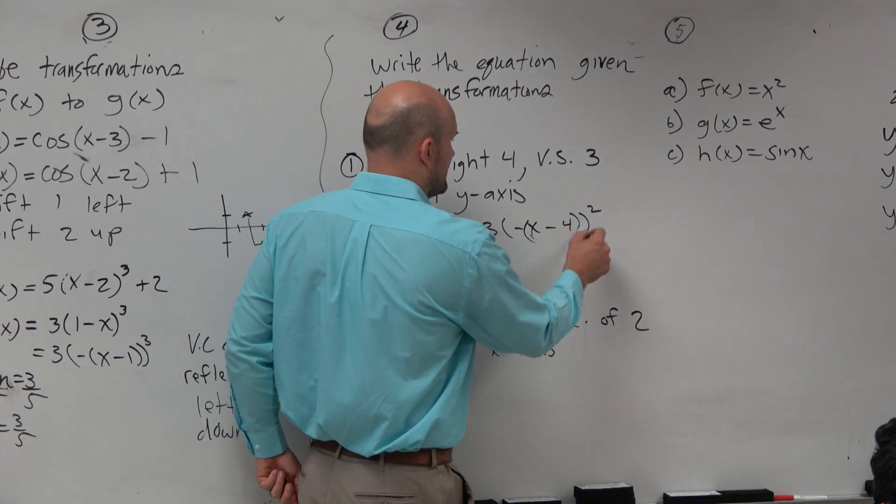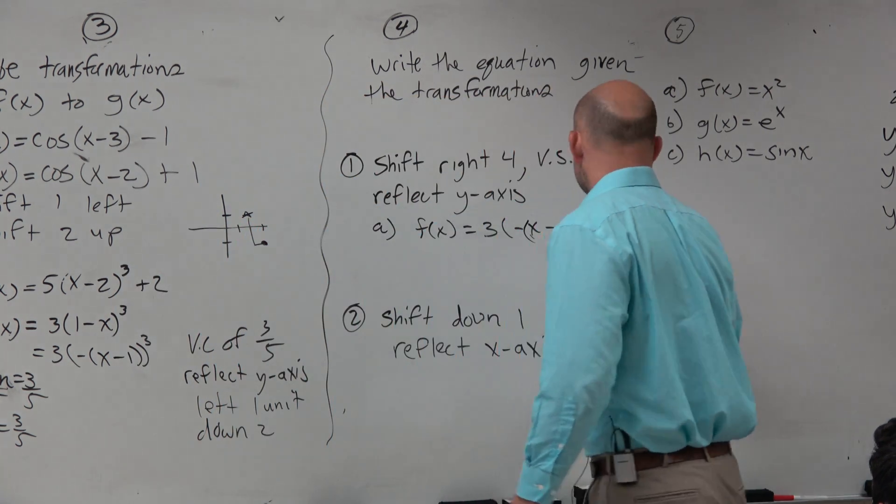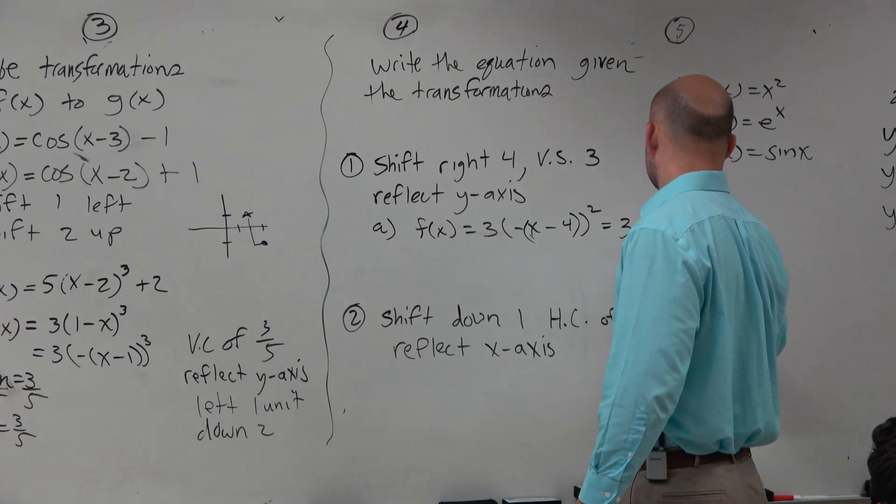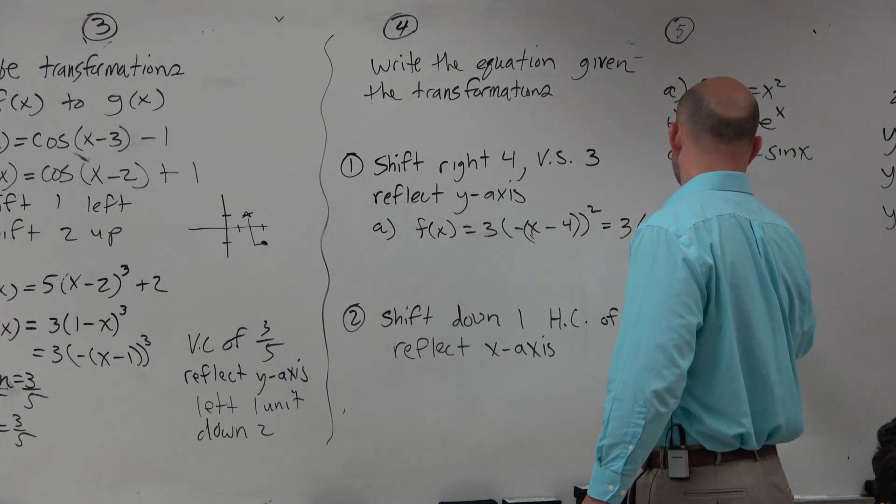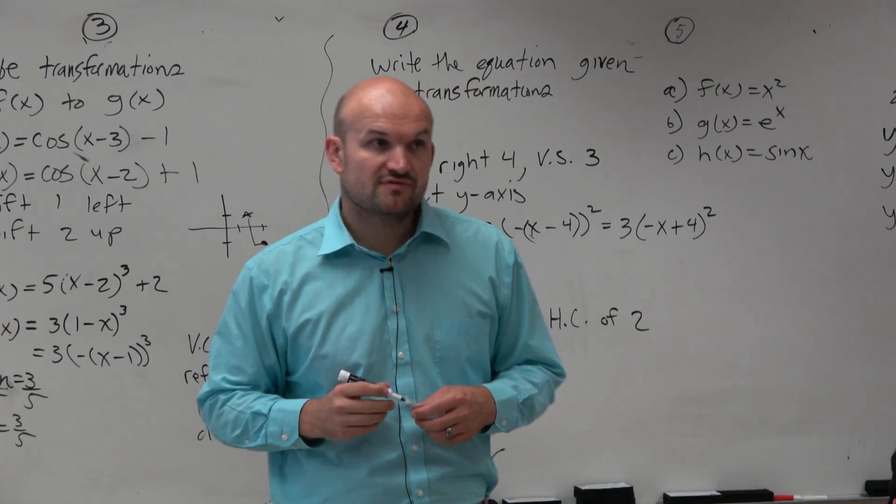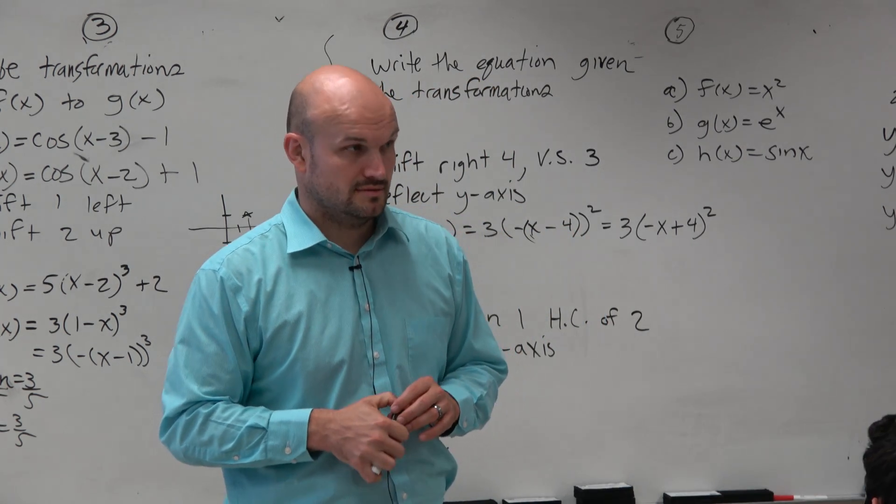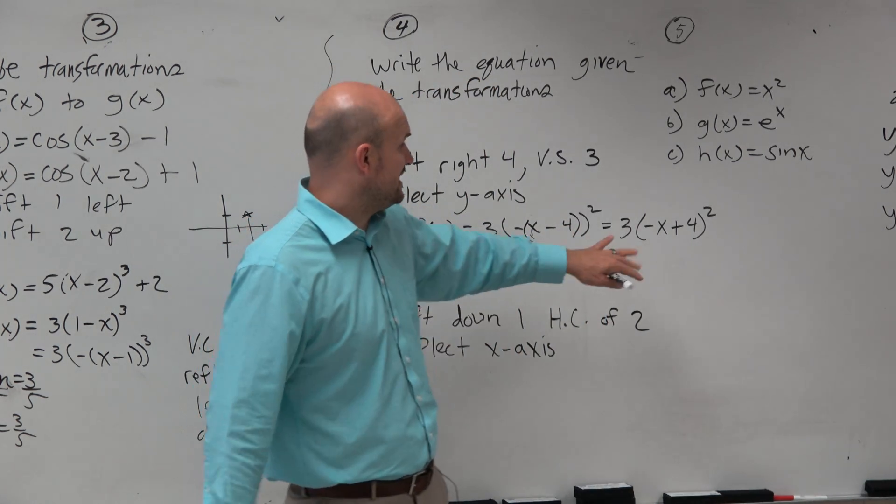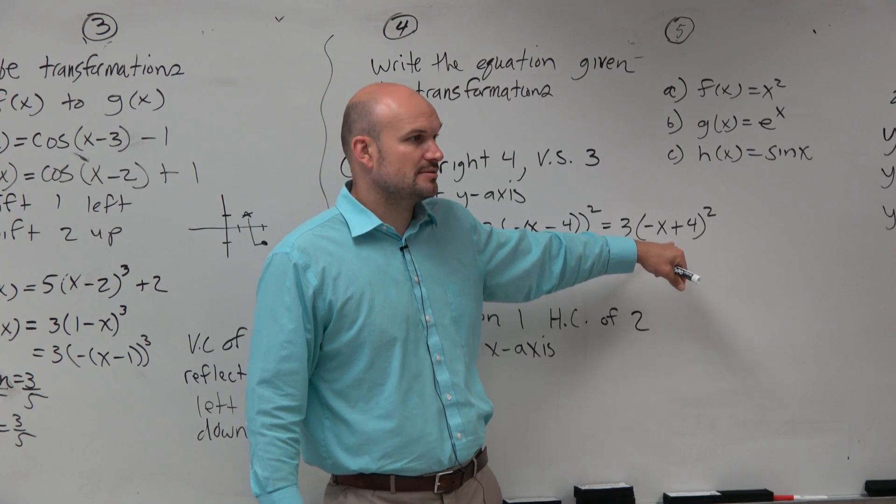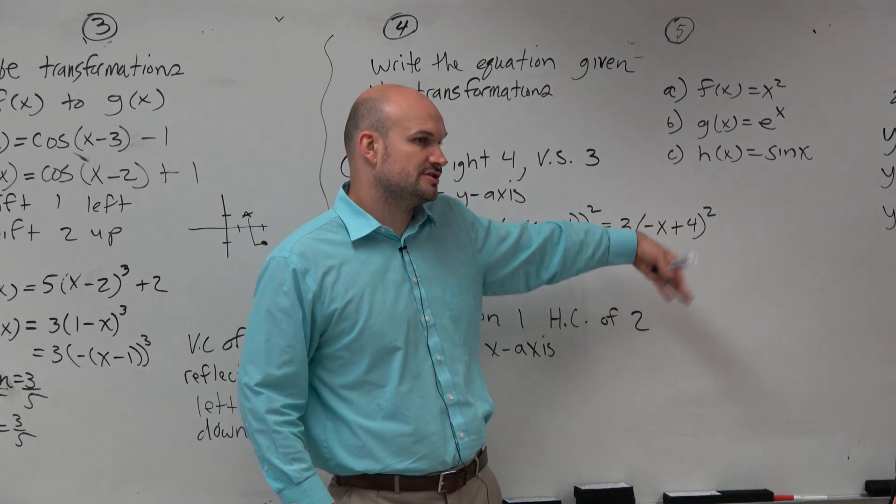Because when you distribute, this is what you get. You get negative x plus 4, right? So that might be the answer on your multiple choice, right? Or something like that. It might look like that. So you've got to make sure you understand how to simplify.